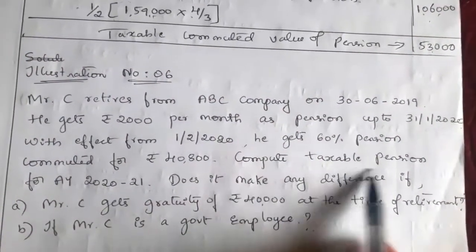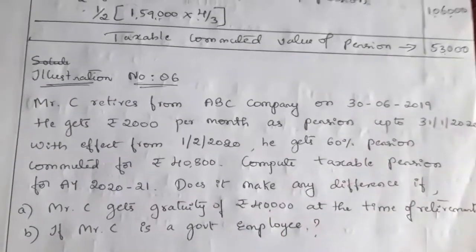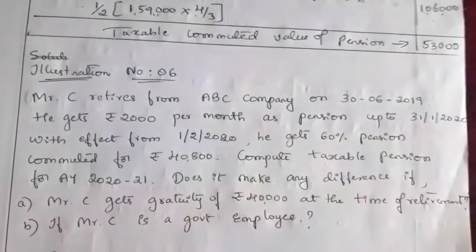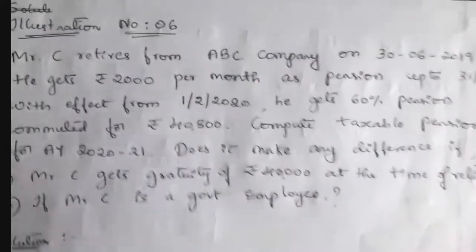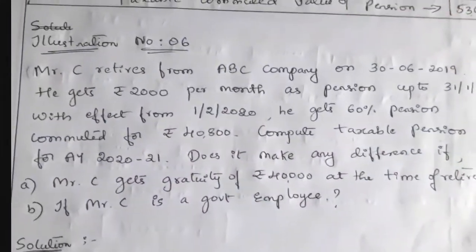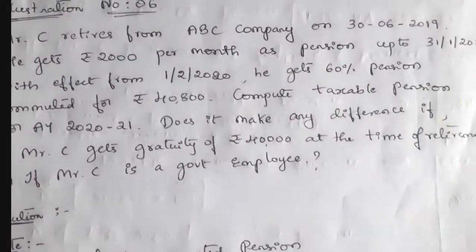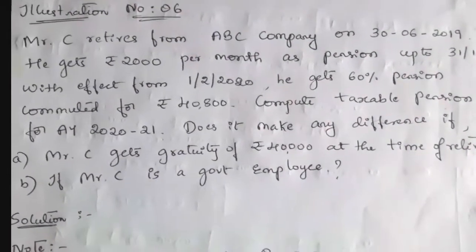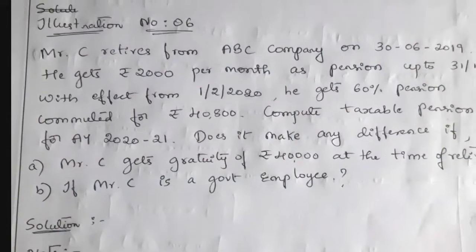We have to compute taxable pension, meaning both commuted as well as uncommuted pension. For commuted pension: if he receives gratuity, exemption is one-third of the full commuted value; if he does not receive gratuity, exemption is half of the full commuted value. Now we see how to compute the uncommuted pension.